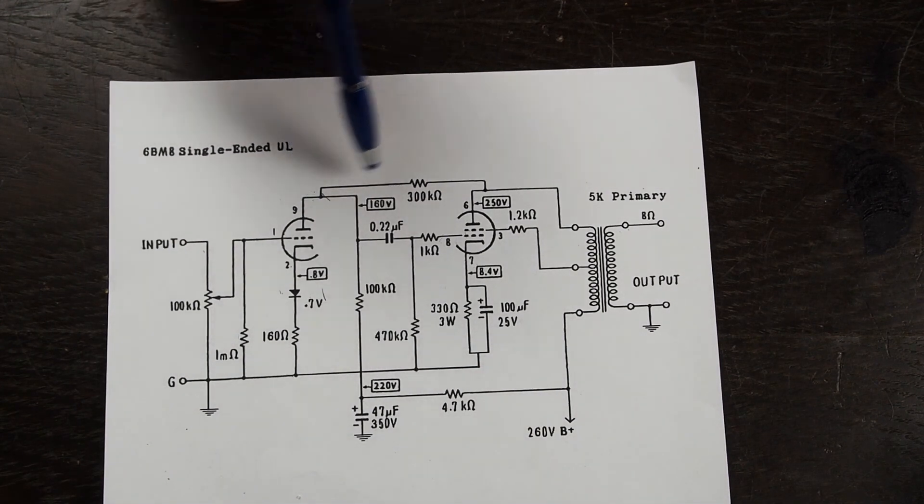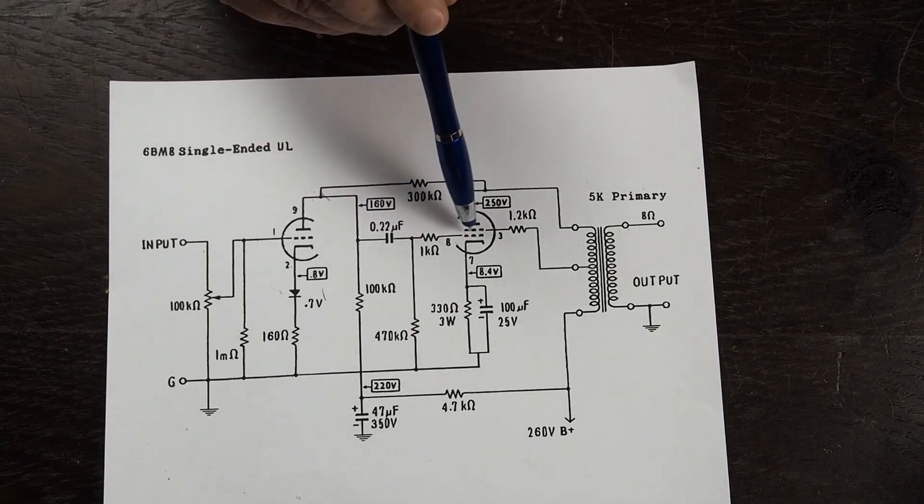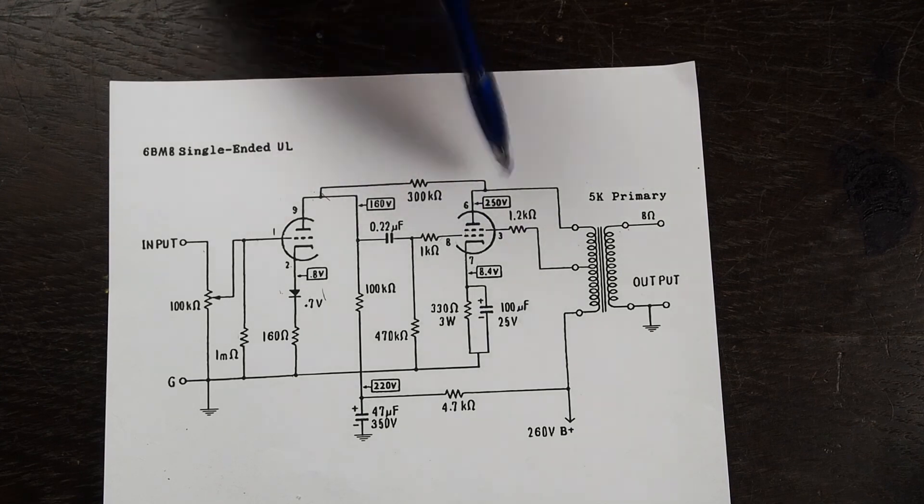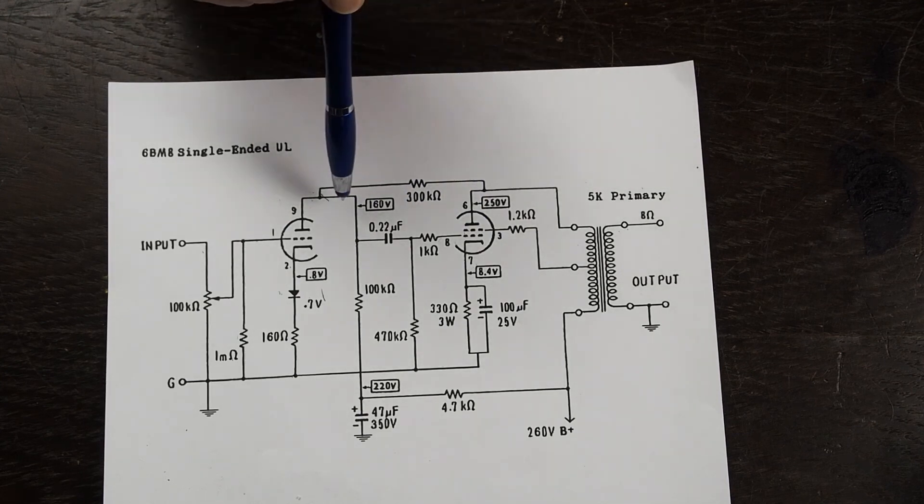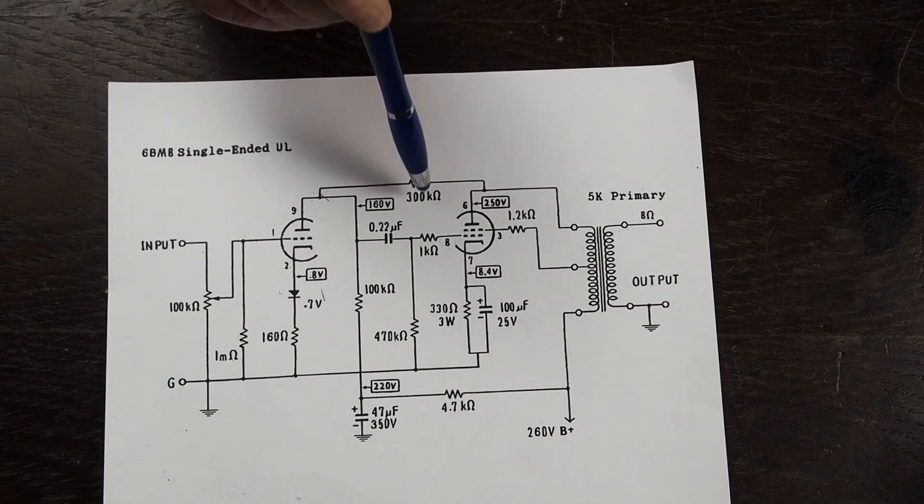It creates a feedback loop back to the input of the tube that the output is coming from like this that helps reduce the distortion and you can adjust the value of this resistor to change the amount of feedback.